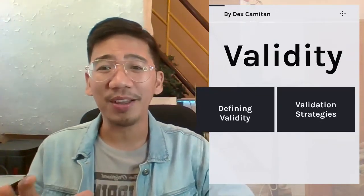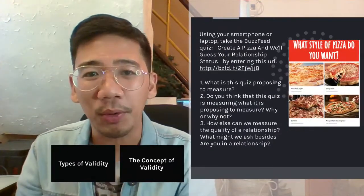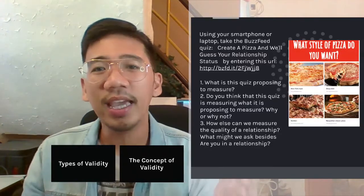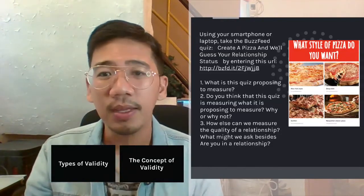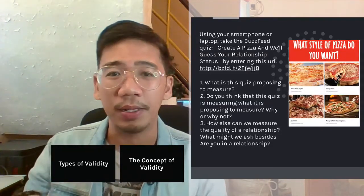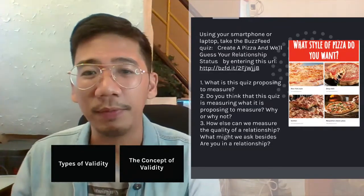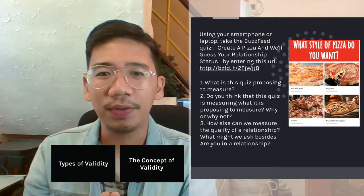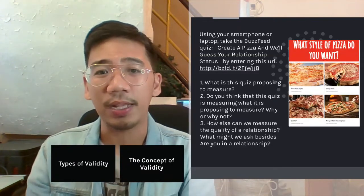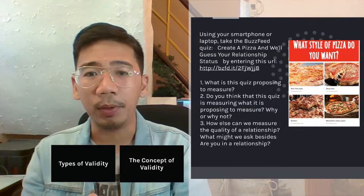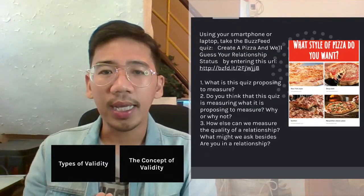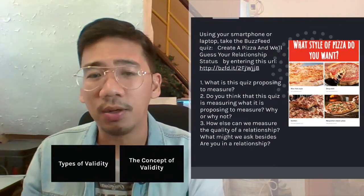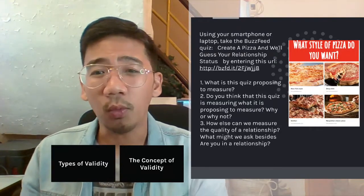Before we talk about the concept of validity, I want you to bring out your phones or laptops and take this BuzzFeed quiz entitled 'Create a Pizza and We'll Guess Your Relationship Status' by entering the URL provided. You can also find the URL in the description below. I want you to pause this video to take the test. Now that you have taken the quiz, I want you to answer the following questions: What is the quiz proposing to measure? Do you think the quiz is measuring what it is proposing to measure? Why or why not?